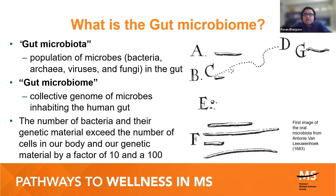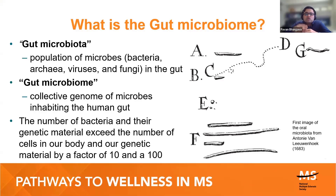On the right is an image from a paper written by Antonie van Leeuwenhoek, the inventor of the microscope, published in the 17th century. He looked at bacteria present in the mouth, so this is perhaps the first image of bacteria from the oral microbiota. What has really changed over time is our understanding of what these microorganisms in our gut actually do.